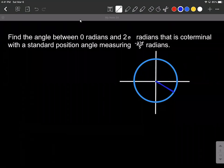So we're having to deal with radians this time around. It's important to remember that coterminal angles just mean two angles where the terminal side lands in the exact same position.